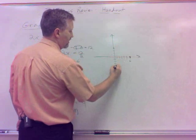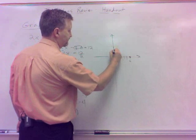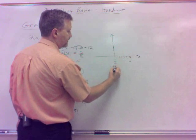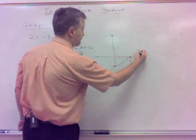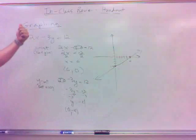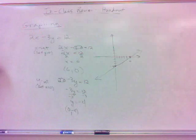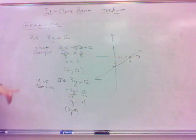That gets me enough there to graph it, 6, 0, it's right there, 0, negative 4, 0x, oh, whoops, negative 4y would be right there, wouldn't it? How about that? And it's a line, I know it's a line.